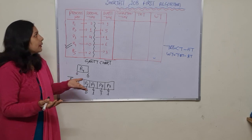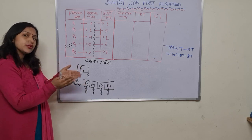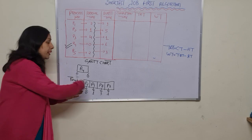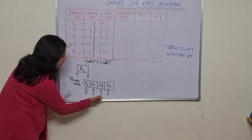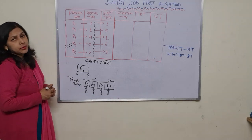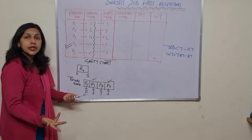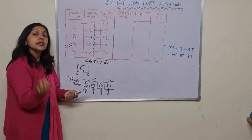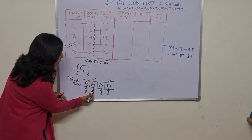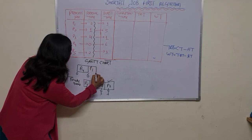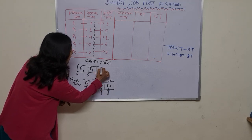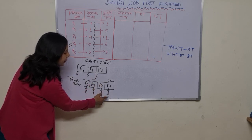Now we apply the Shortest Job First algorithm: the process with the minimum burst time executes first. Checking the ready queue, P1 and P3 both have burst time 1 — a tie. In this case, we apply FCFS: the process that arrived first executes first. P1 arrived before P3, so P1 executes from 6 to 7 (burst time 1). Then P3 executes from 7 to 8 (burst time 1).